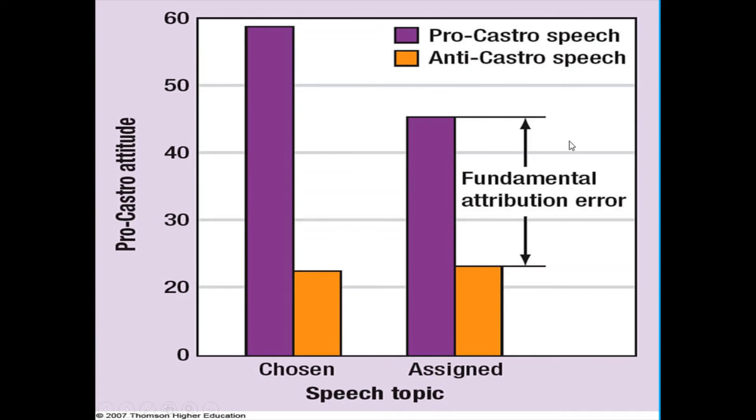But look at the results on the right side of the graph. This is the condition in which participants were told that the stance of the essay or the speech was assigned. And yet still we find that those who read the pro-Castro speech assumed that the writer had a pro-Castro stance, even though the stance of the speech was assigned. So what we should see here are these two bars, the purple and the orange, are similar in height, but in fact they are not.